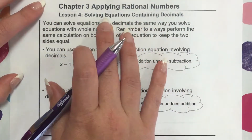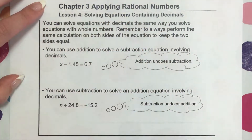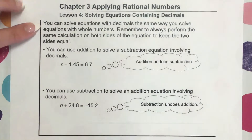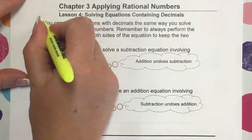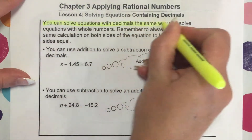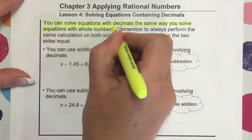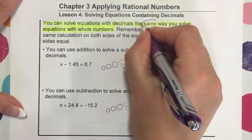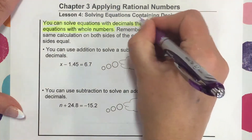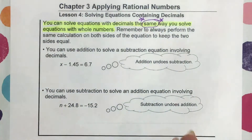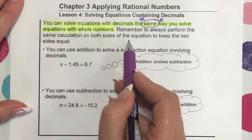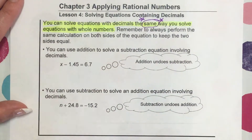We're going to be reviewing. We solved some equations back in the last chapter, and now we're going to solve equations that contain decimals. You can solve equations with decimals the same way you solve equations with whole numbers — I just want to accentuate the word 'same.' Remember to always perform the same calculation on both sides of the equation to keep the two sides equal.